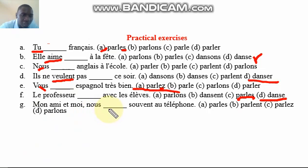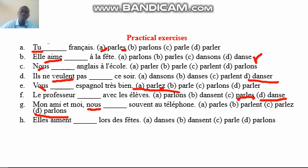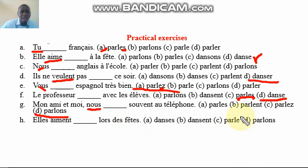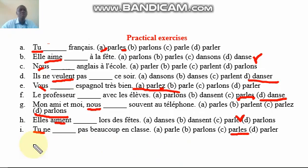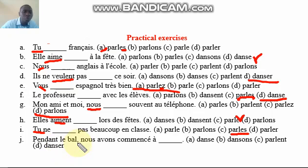'Mon ami et moi, nous parlons souvent au téléphone' — me and my friend, we speak often on the telephone. For 'nous,' it has to be 'parlons.' Also, 'tu ___ beaucoup en classe' — it has to be 'parles' with S, so 'tu parles beaucoup en classe.' Finally, 'pendant le bal, nous avons commencé à ___' — since 'avons commencé' is already a conjugated verb in the past tense, the next verb must be in the infinitive: 'danser.'